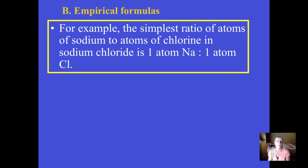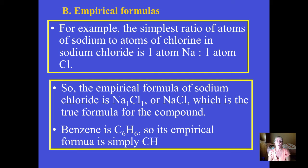If you have the formula of salt — sodium chloride — there's simply one sodium for every one chlorine atom. We don't write ones in chemistry. Salt is an example where its real formula in nature, NaCl, is the same as its empirical formula, NaCl.